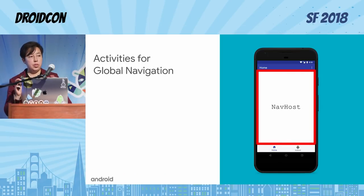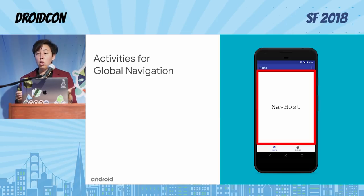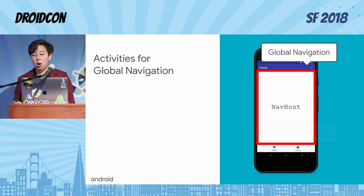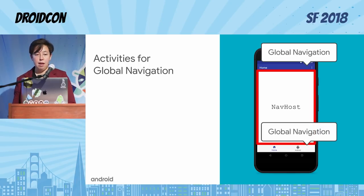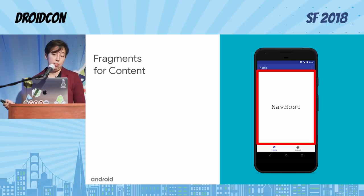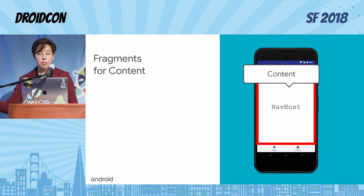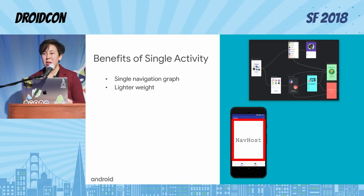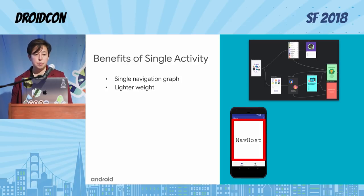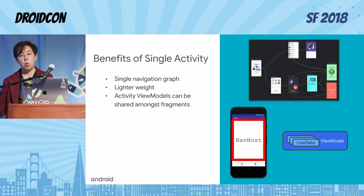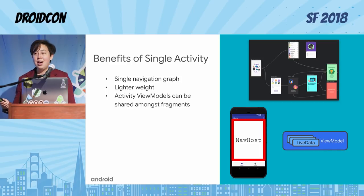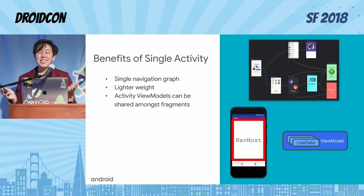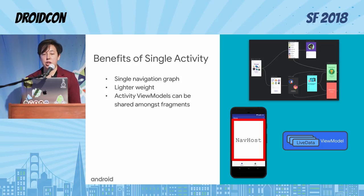The recommended thinking is that activities become a window that holds the global navigation for your app — such as a toolbar, app bar, or bottom nav — and the actual content is reserved for fragments, which are swapped out in the nav host fragment window. The benefits are: you can more fully leverage the single navigation graph, it's a lot lighter weight to build fragments versus activities, and if you're using the Lifecycle Library's ViewModels, you can make a view model for an activity which can be shared amongst a bunch of fragments, making it really easy to share data across fragments.